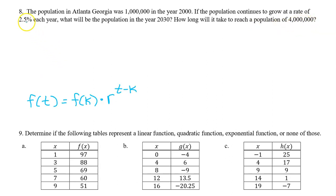When the output values are increasing or decreasing by the same percent over equal length input value intervals, we know we are dealing with an exponential function, which can be modeled like this, where f(t) and f(k) are two values of the function that we know.